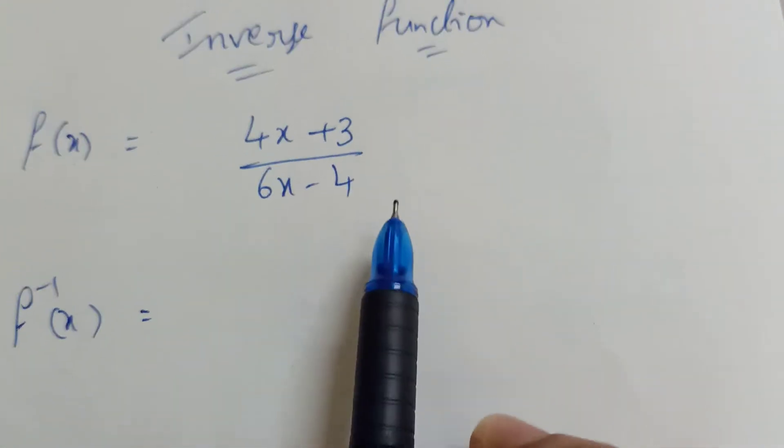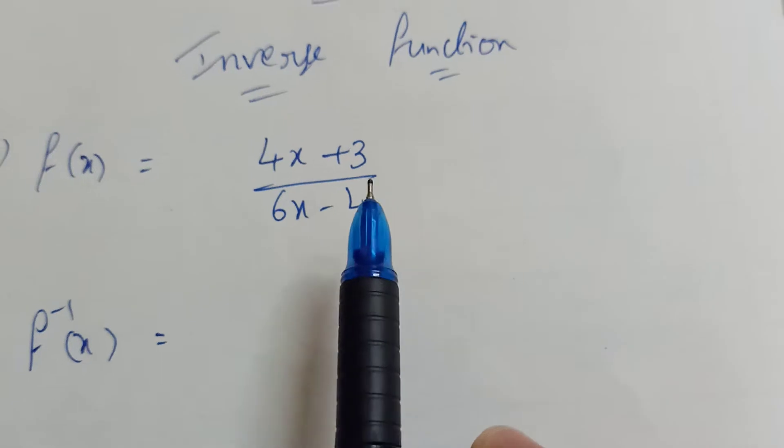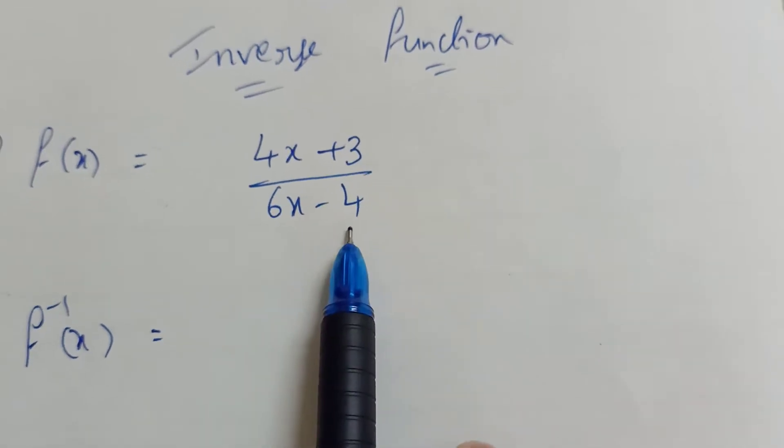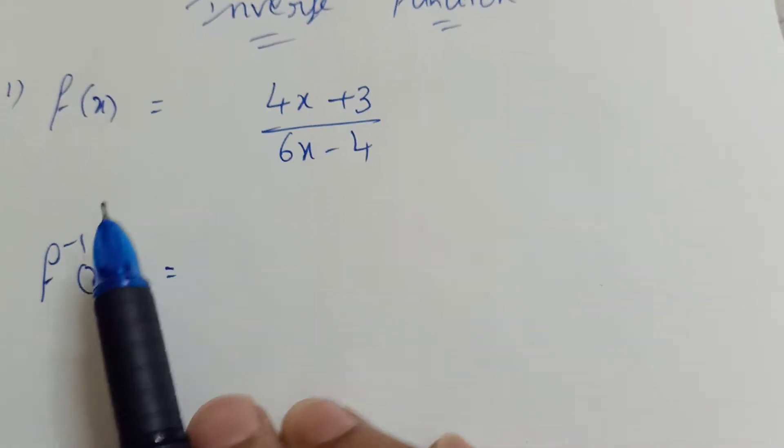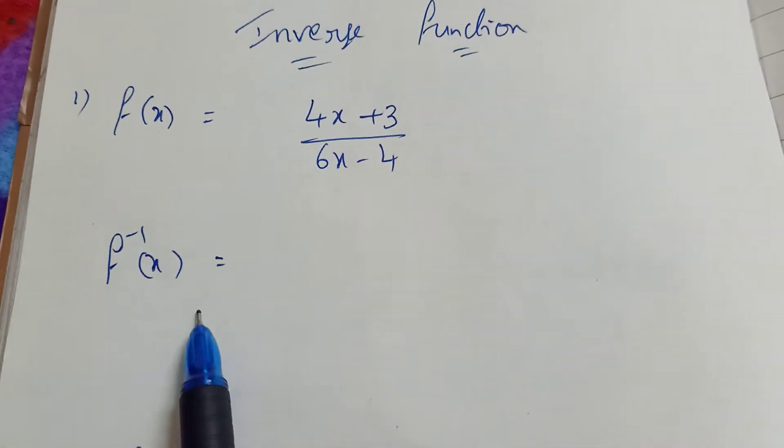This is a b by q form. We can find out the inverse function using this b by q form.